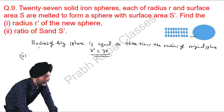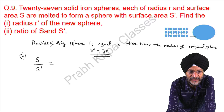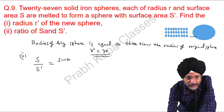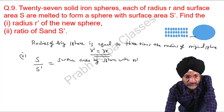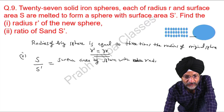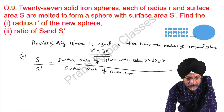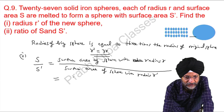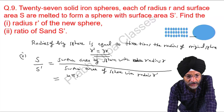Now we need to calculate the ratio of S to S dash — that is, the surface area of the sphere with radius R compared to the surface area of the sphere with radius R dash. The formula for the surface area of a sphere is 4 pi R squared.